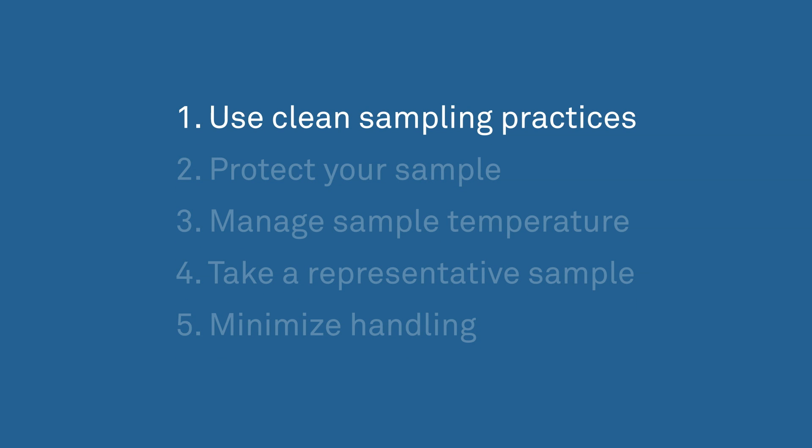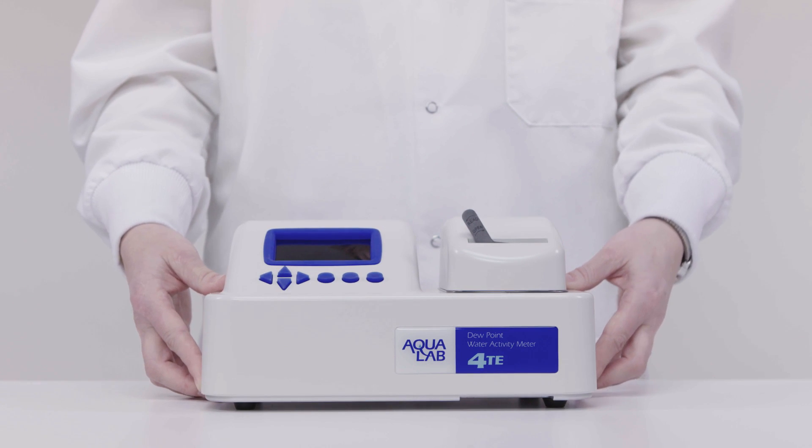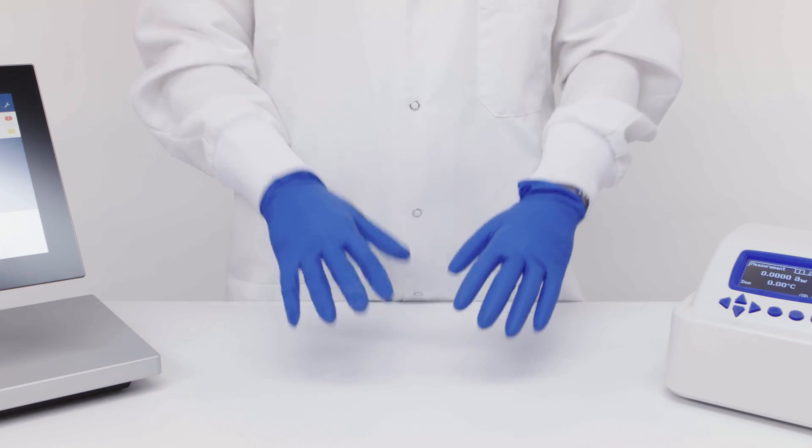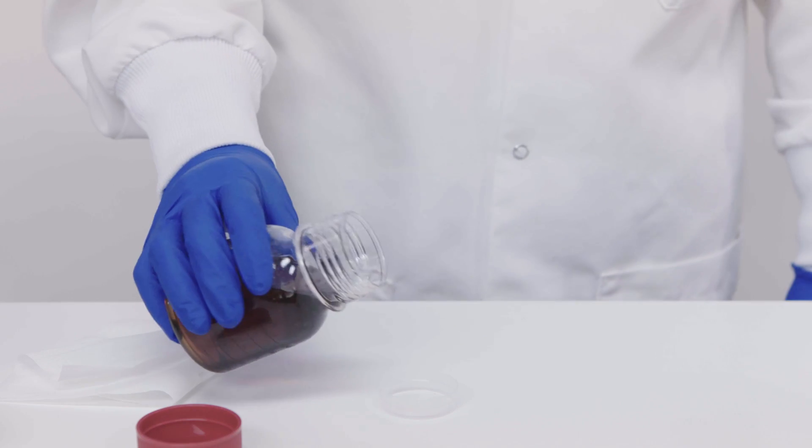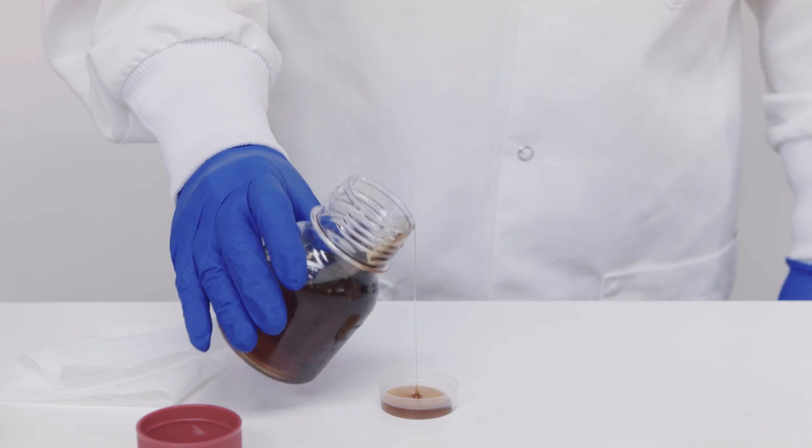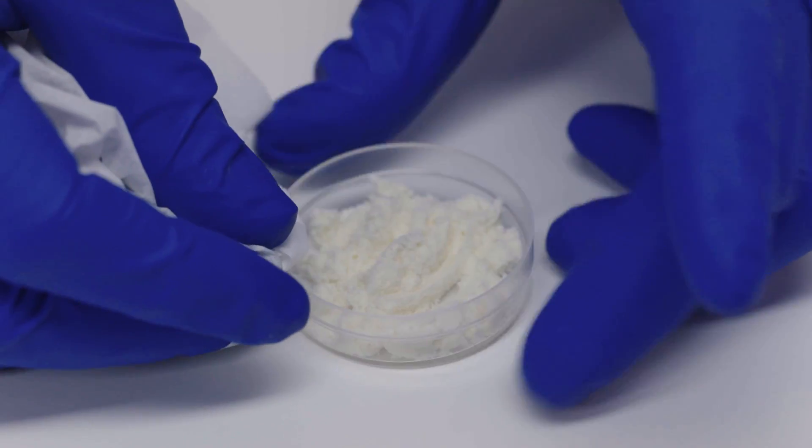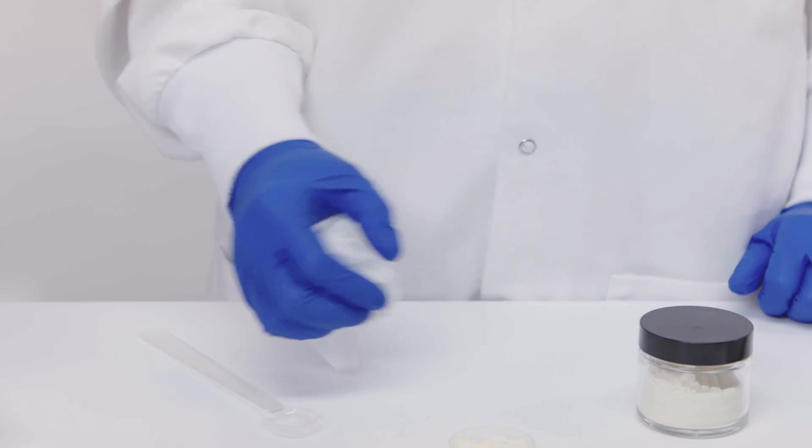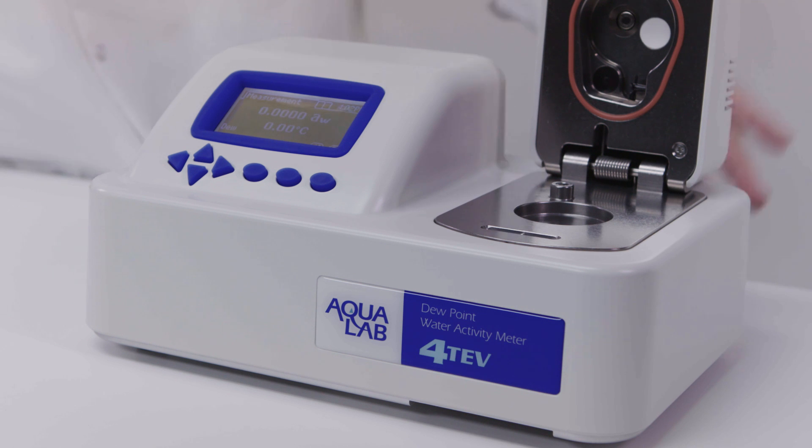One, use clean sampling practices. Place your instrument in a clean location. Make sure you have clean hands or wear lab gloves. Use a clean sample cup for each reading. Fill your sample cup no more than half full. Wipe the bottom, the edges, and the rim of your sample cup with a Kimwipe before putting it in the instrument so you don't contaminate the sample chamber. Even small amounts of water or contamination can significantly affect the reading.